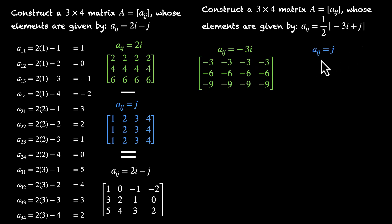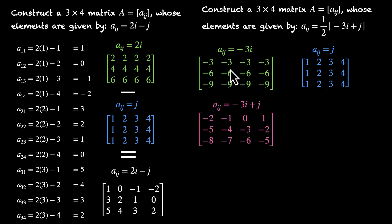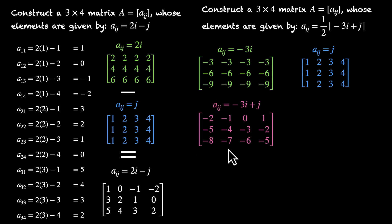Then we handle j. The matrix for Aij equals j is just the column number: 1s, 2s, 3s, and 4s — exactly as before. Now I add these two matrices to get minus 3i plus j. Adding corresponding elements: minus 3 plus 1 = minus 2, minus 1, 0, plus 1 for row 1. Row 2: minus 5, minus 4, minus 3, minus 2. Row 3: minus 9 plus 1 = minus 8, minus 7, minus 6, minus 5.